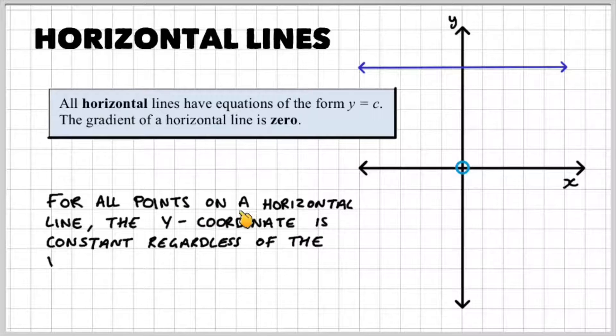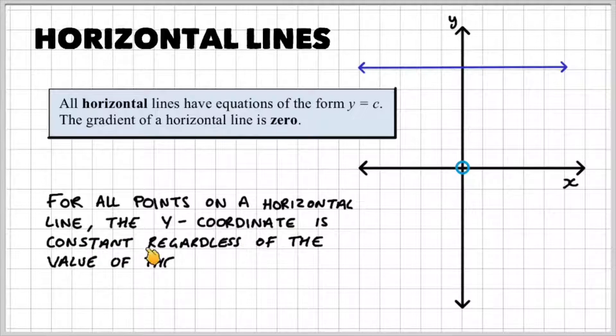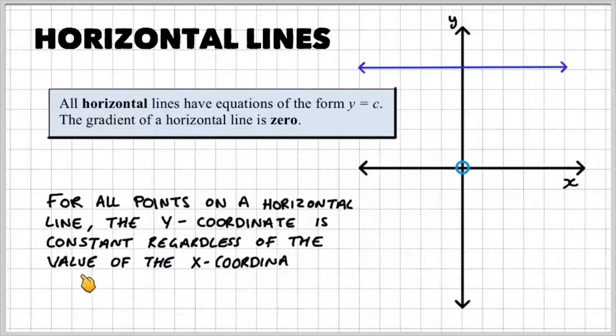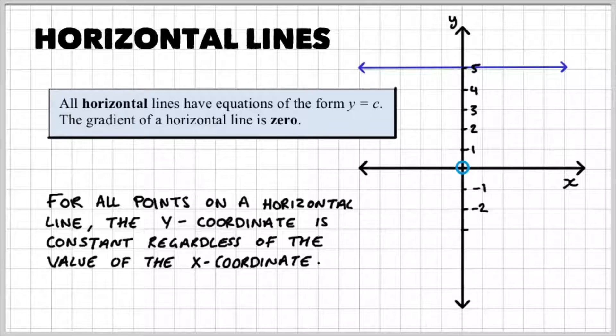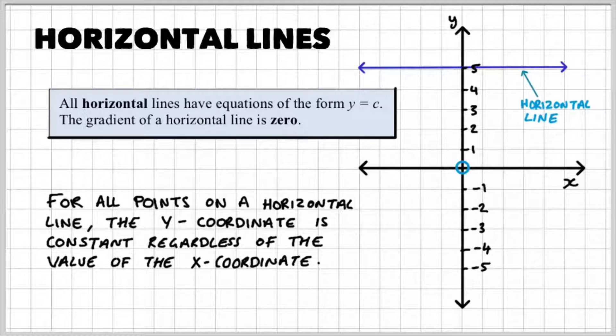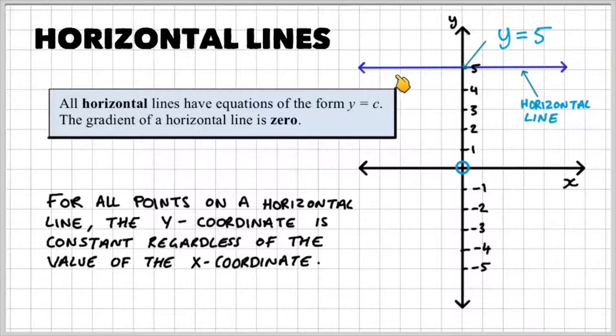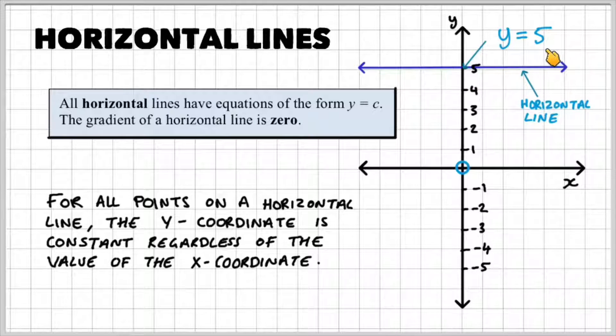For all points on a horizontal line, the y-coordinate is constant regardless of the value of the x-coordinate. So if we take this horizontal line here, we can see that it cuts the y-axis at a point where y equals 5. So regardless of the x-coordinate, the line always passes through y equals 5.